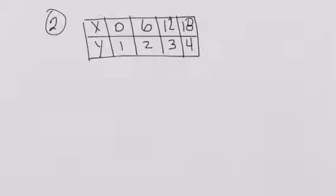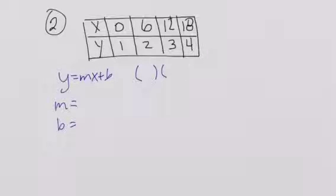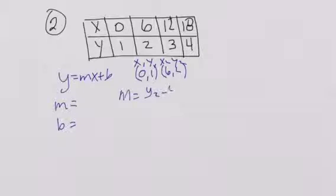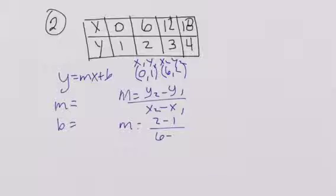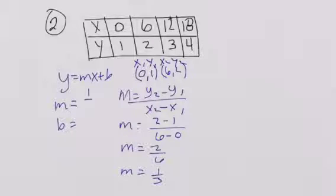We have to find the equation of the line using this chart. So Y equals MX plus B, M equals, B equals. We're going to need some ordered pairs for our M. So we're going to use (0, 1) and (6, 2). This is X1, Y1, X2, Y2. M is equal to Y2 minus Y1 over X2 minus X1. M is equal to 2 minus 1 over 6 minus 0, so M is equal to one-third. So we have our slope.